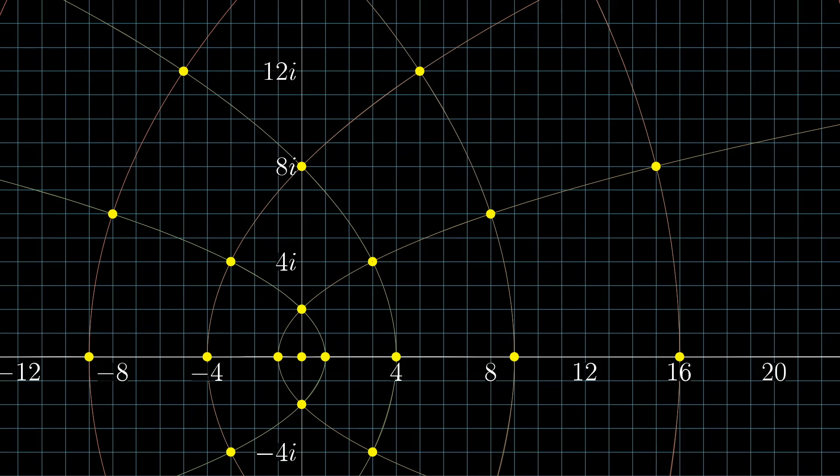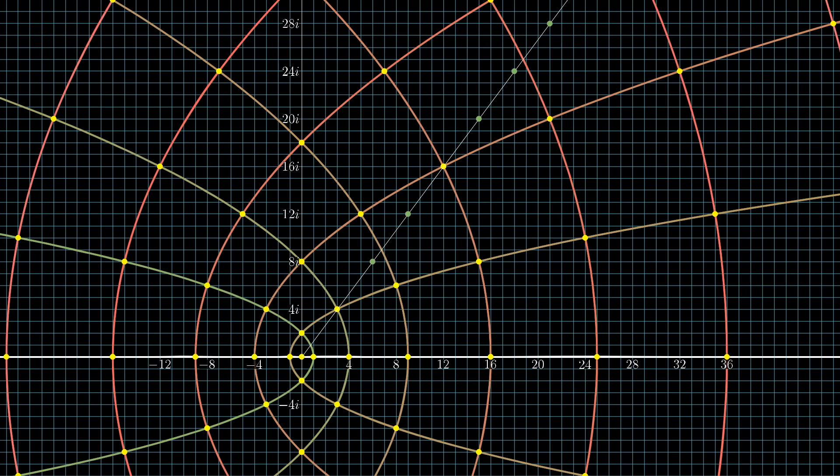A nice way to think about these multiples that we miss is to take each point that we get using this squaring method and draw a line from the origin through that point out to infinity. Marking all of the lattice points that this line hits will account for any multiples of these points that we might have missed.